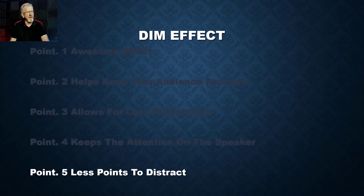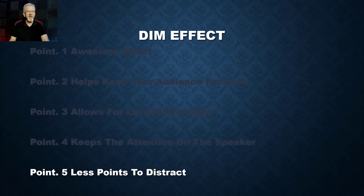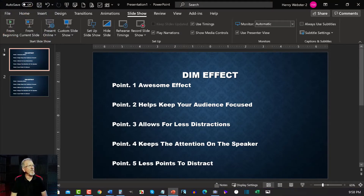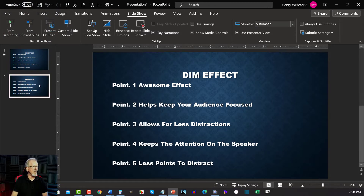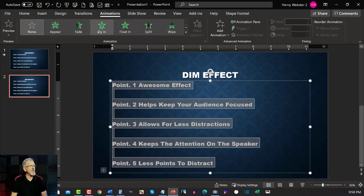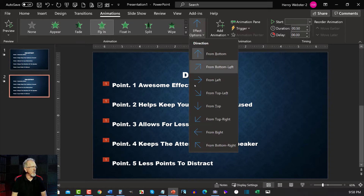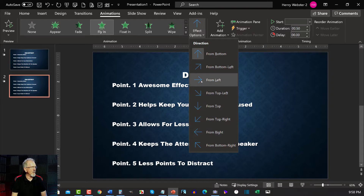Well, I'm glad you asked. Let's jump into PowerPoint now. First thing we're going to want to do is go over to this particular slide and highlight everything on it. Then I plan on going over to the Animation tab. The first thing I'm going to do is apply the fly-in effect. I like to have the flying effect coming in from either the left or the right — in this particular case, I'm going to have it coming in from the left.